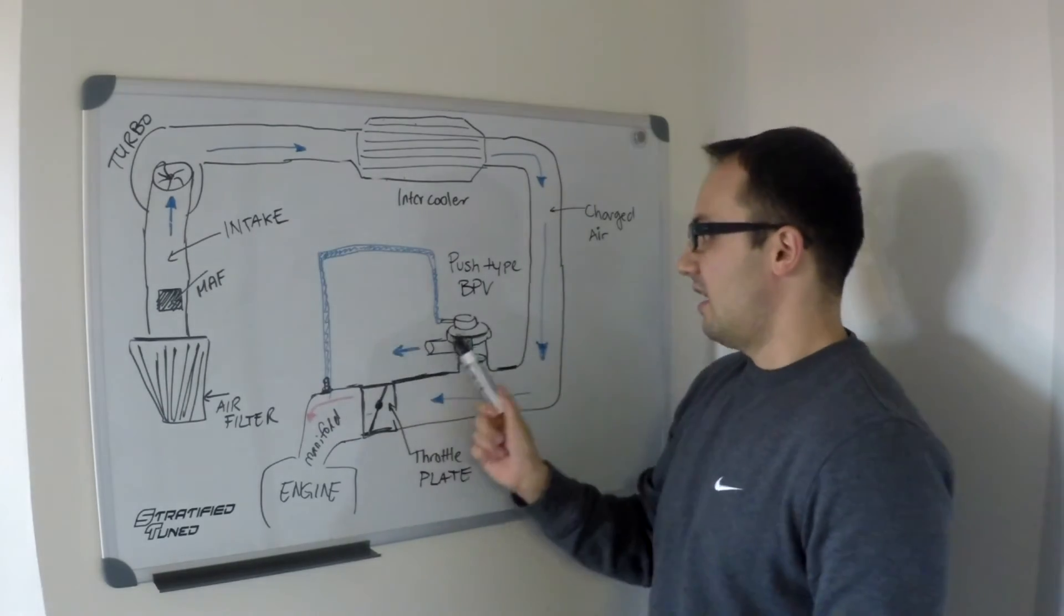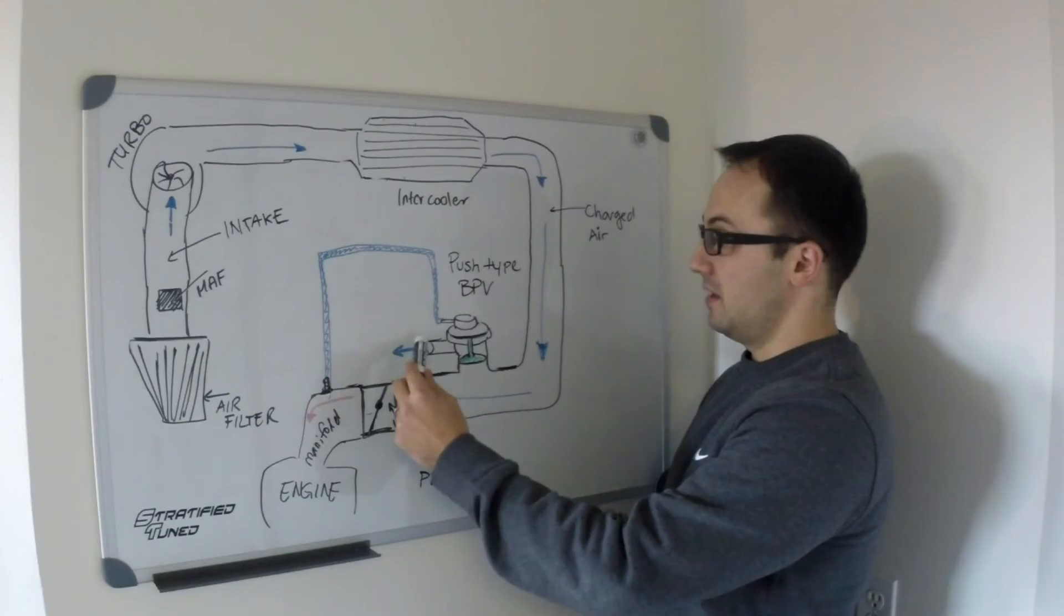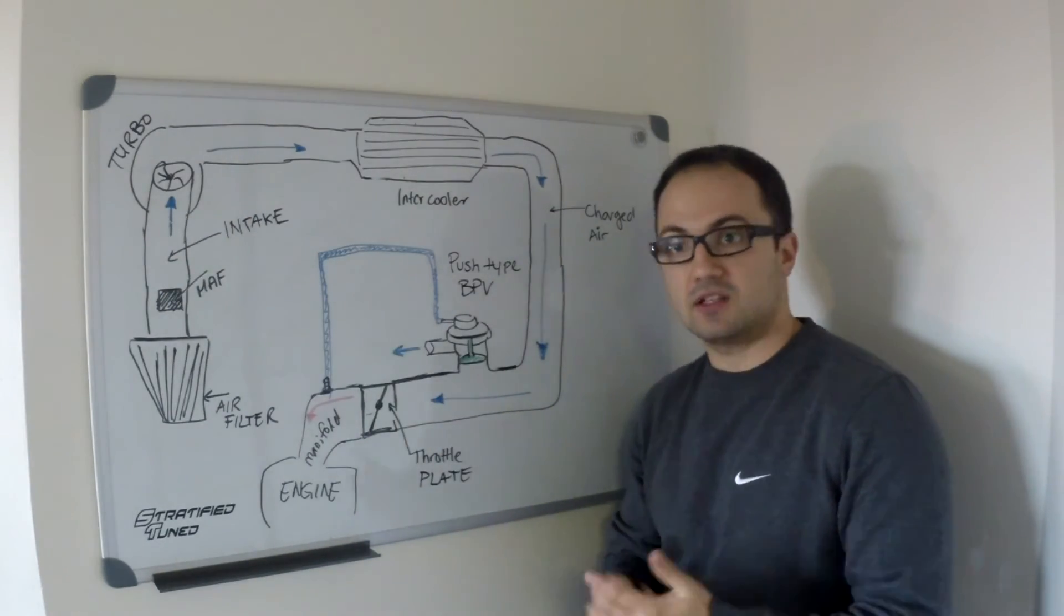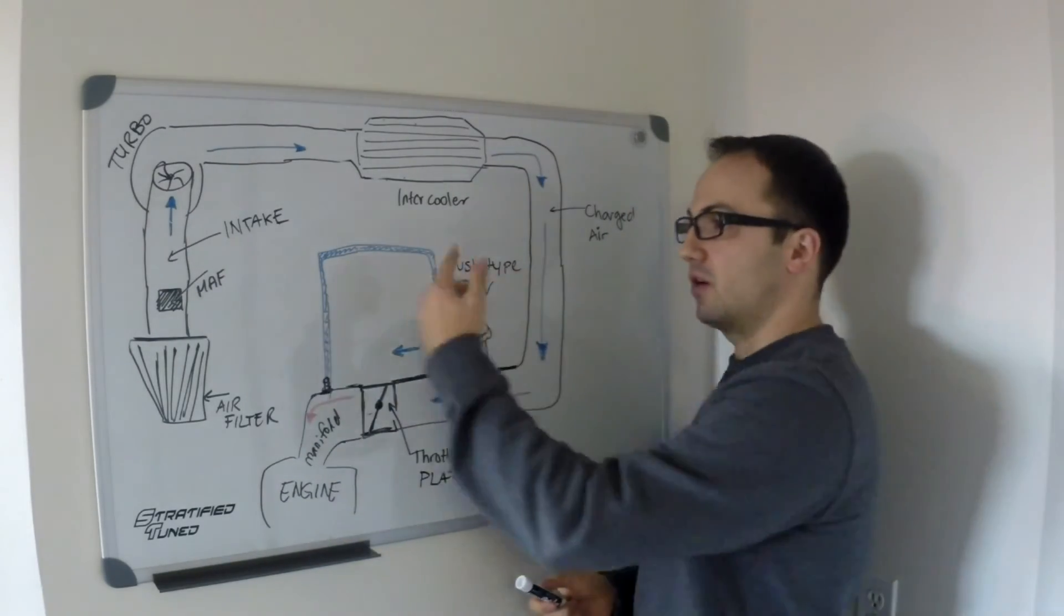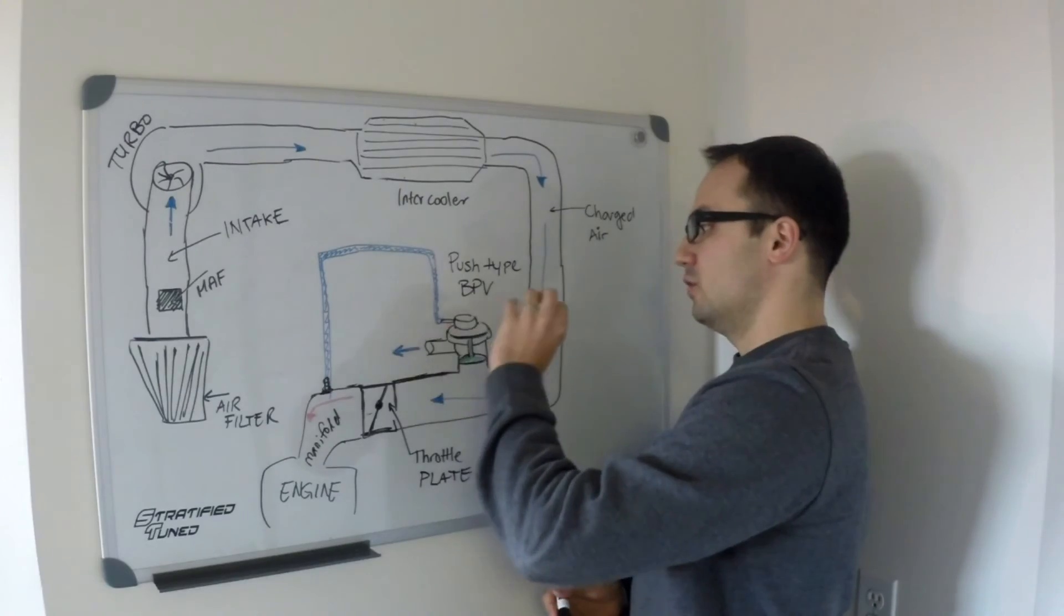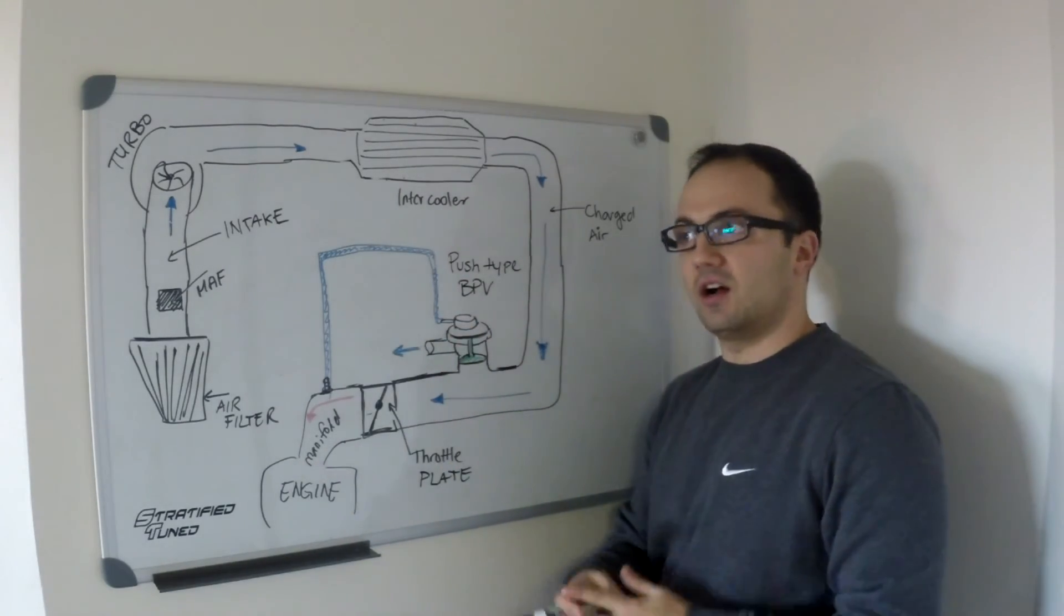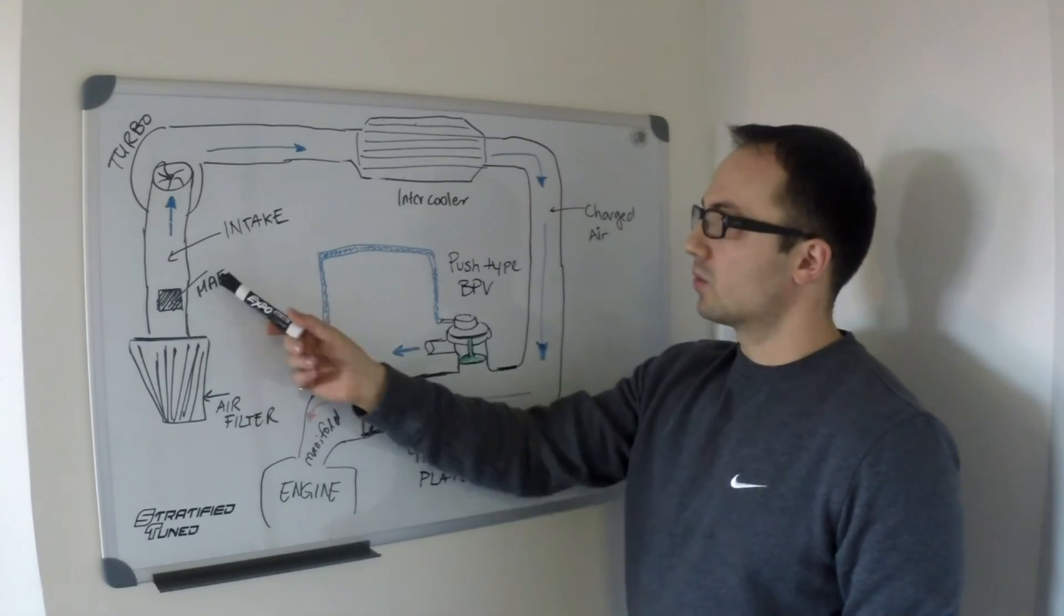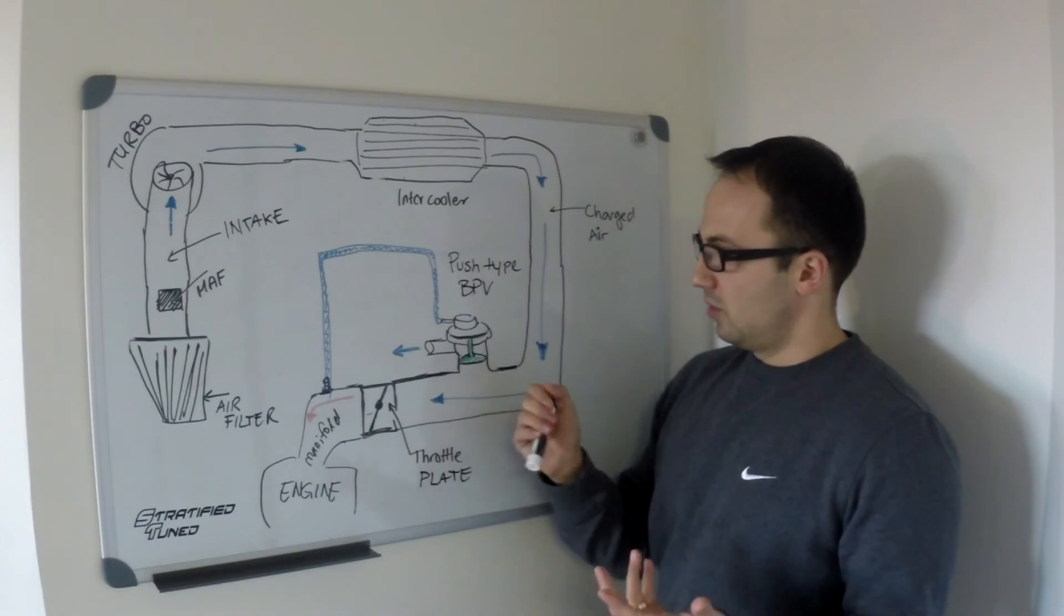And on MAF-based cars, the released air gets put into the charge piping after the mass air flow sensor, because your mass air flow sensor has already measured and calculated the amount of air going in. Again, if you release this to atmosphere or vent to atmosphere, which a lot of people enjoy due to the noise it makes, then your car will run rich with a mass air flow sensor. So overall,